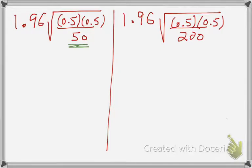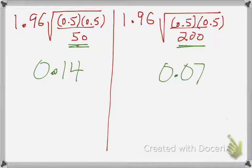So, plugging in 50, plugging in 200, on this side we get a margin of error of 0.14, on this side we get a margin of error of 0.7. So, how much did the margin of error change? Well, that looks like it halved from what it was originally.